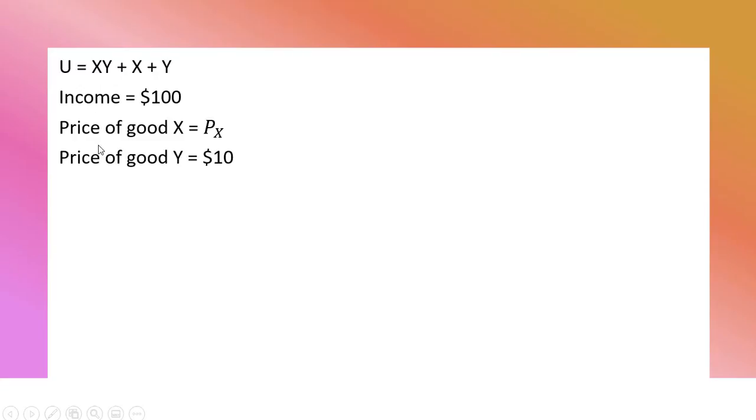Here's the consumer's utility function, the consumer's income, and prices. The price of good X we'll leave as P subscript X, and the price of good Y is $10. The marginal utility of good X is Y plus 1. The marginal utility of good Y is X plus 1.